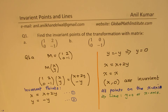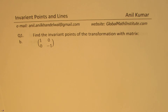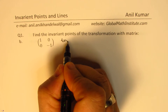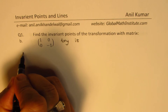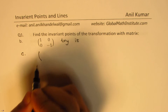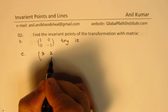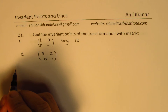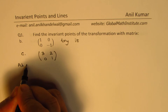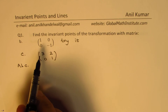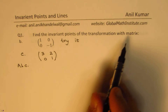Let's take part C now. I'm adding one more example for variation. Let's have a matrix [3, 2; 0, 1]. We'll work on this particular matrix. So for matrix M = [3, 2; 0, 1], we need to find the invariant points. Applying this transformation to any general point (x, y), what we get is (3x + 2y, y).